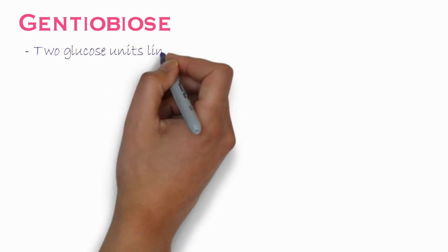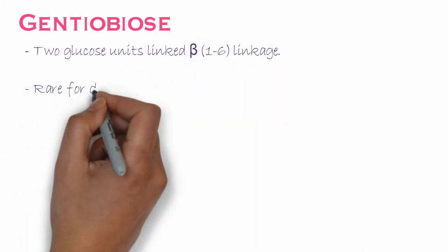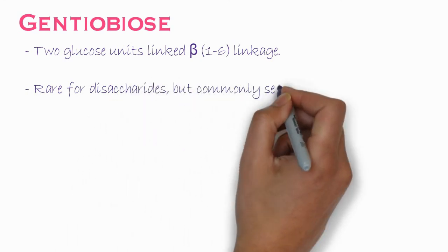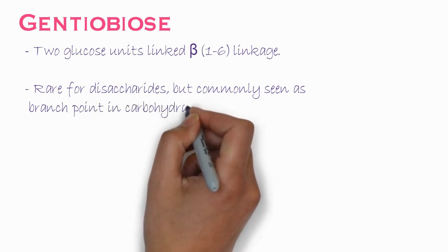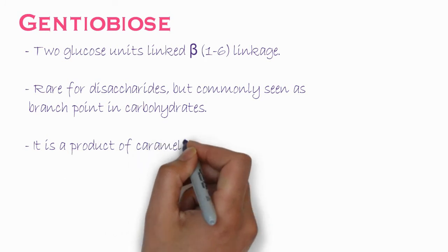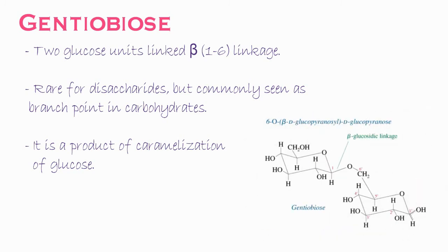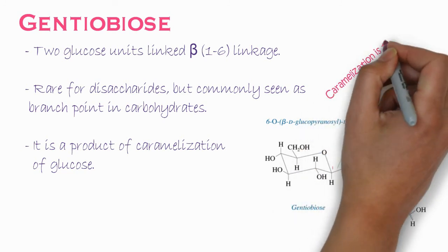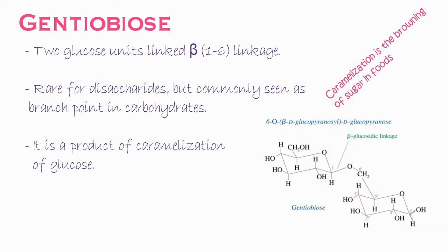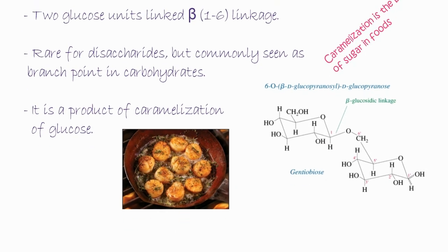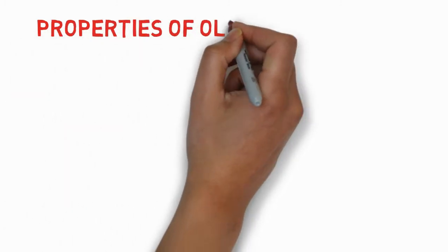The next example is gentiobiose. It is made of two glucose units linked to each other by a beta-1,6 linkage. It is a rare disaccharide but is commonly seen at branch points in many polysaccharides. It is produced by the caramelization of glucose. In its chemical structure, beta-D-glucose is attached to another glucose by a 1,6 beta-glycosidic bond. Caramelization refers to the browning of sugar in food — the browning seen in sugar-containing foods is known as caramelization.